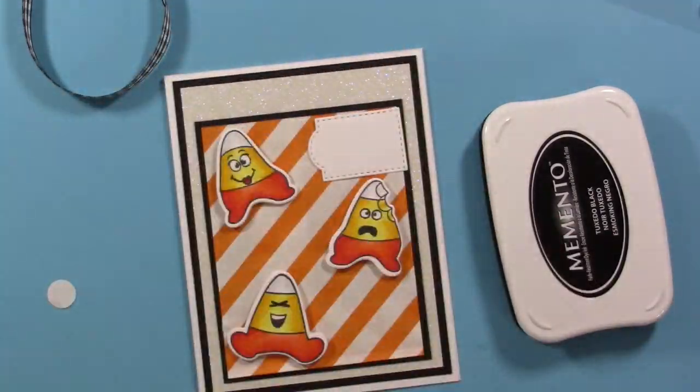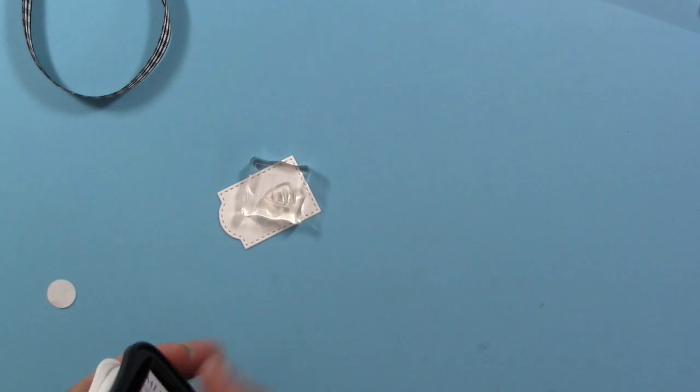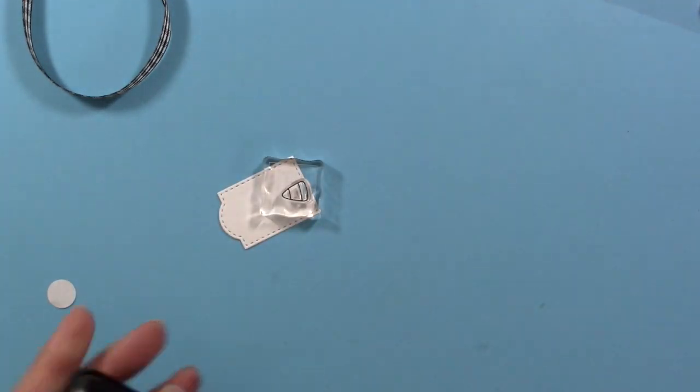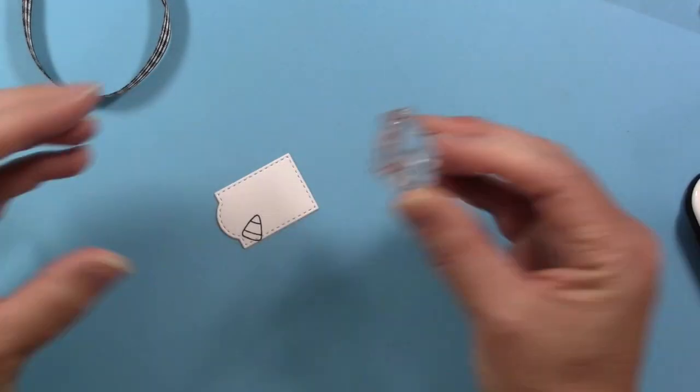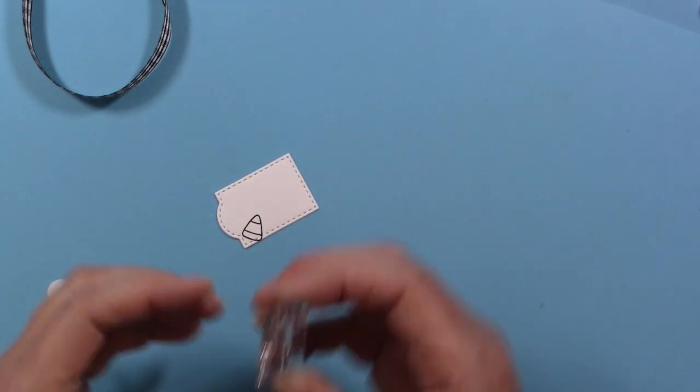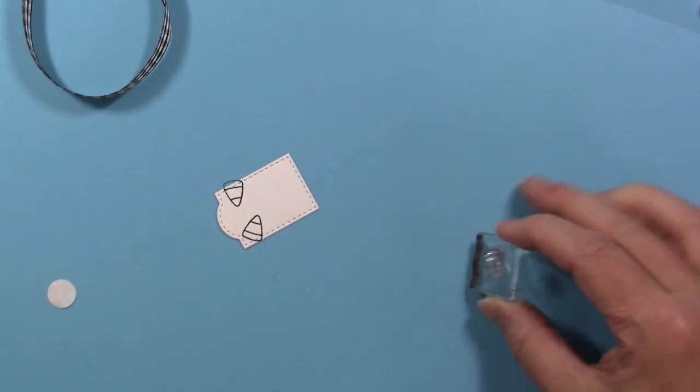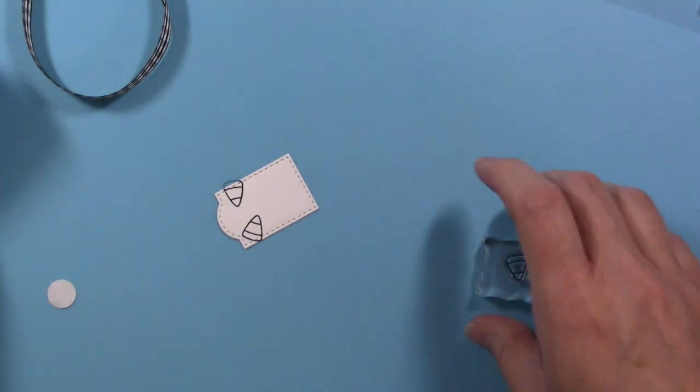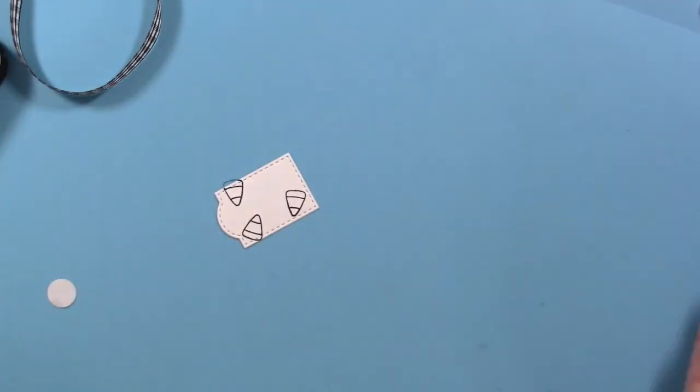Also in the set, you get a set of dies that has this cute little tag. I'm going to take one of the little candy corns from the stamp set and stamp this repeatedly in my Memento Tuxedo Black ink. This is a Copic safe ink, and then I'll be coloring those little candy corns with my Copics.